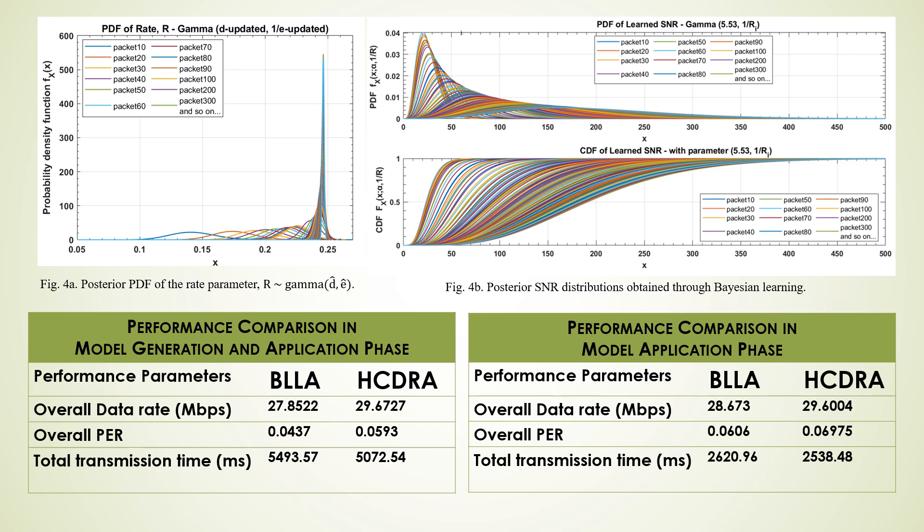Next we do a performance comparison of our proposed algorithm, Bayesian learning based link adaptation (BLLA), and our earlier proposed algorithm, hybrid channel dependent rate adaptation (HCDRA). HCDRA solely depends upon the channel state information feedback. In BLLA there are two phases: a model generation phase and a model application phase. The learning of the rate parameter and updating of the posterior distribution of the SNR all happen in the model generation phase, at the end of which we have obtained the learned CDF of the SNR. In the model application phase, this distribution is sampled and MCS is selected based on the sampled SNR for each packet transmission, avoiding the frequent CSI feedback overhead.